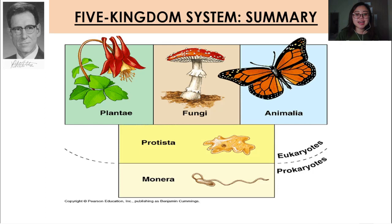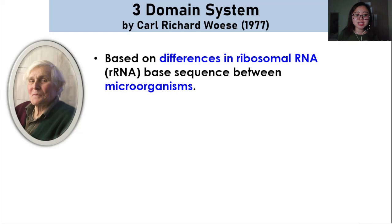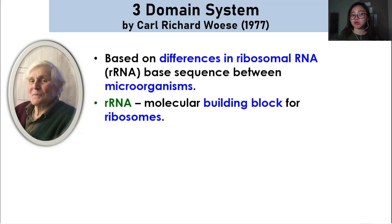That is it for Whittaker's five kingdom system. We're now going to move on to another system called the three domain system. This system is coined by Carl Richard Woese and his research was published in 1977. Based on the three domain system, it is actually based on the differences in the ribosomal RNA or rRNA base sequence between microorganisms. The rRNA is the molecular building block for ribosomes.